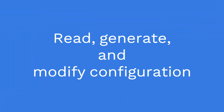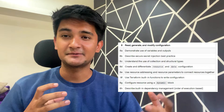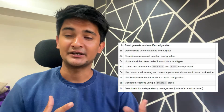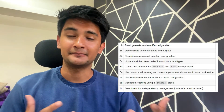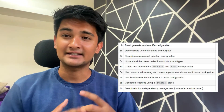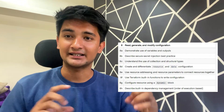Number eight is read, generate, and modify configuration. In this, you need to understand how to use Terraform variables and outputs, what is the difference between a Terraform resource and a data block, the different built-in functions provided by Terraform, and meta arguments like count, depends_on, and lifecycle.